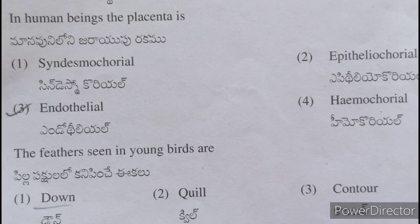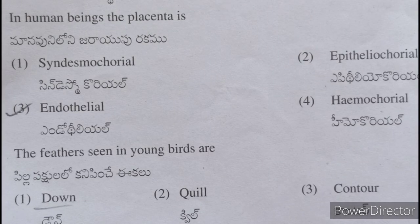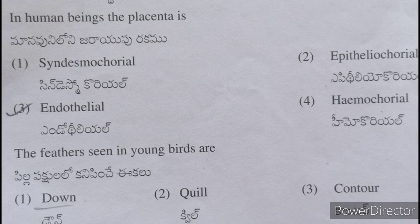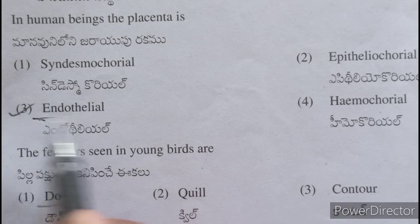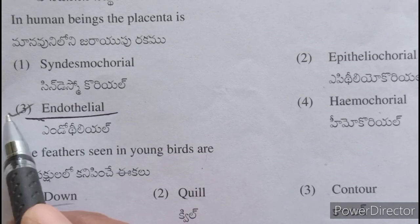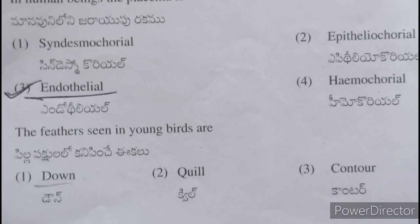In human beings, the placenta is — manavu ni lo ni jarayi wu e rakaaniki chindindindhi — endothelial type.